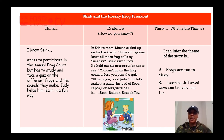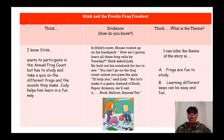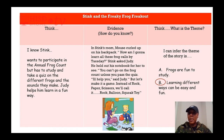Let's check our answer. The question was: which is the theme of this selection? A, frogs are fun to study, or B, learning different ways can be easy and fun. The correct answer is B — learning different ways can be easy and fun. That's something that can apply to a lot of people. A, frogs are fun to study, wouldn't necessarily apply to everyone, so B is the correct choice for the theme of this story.